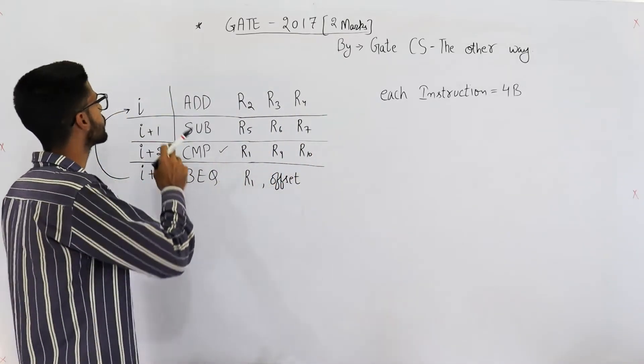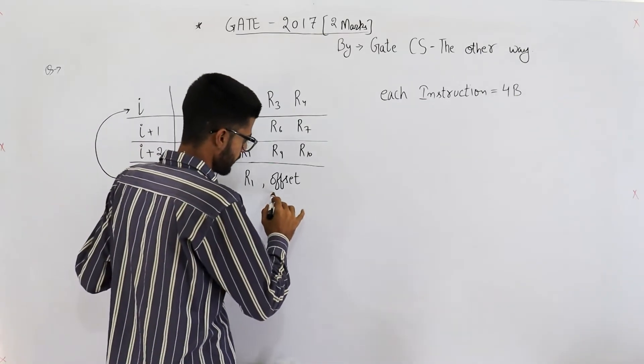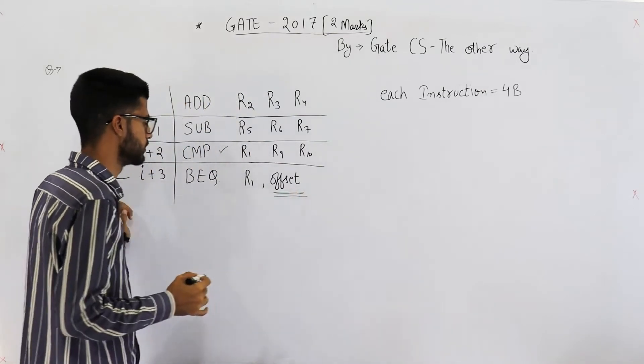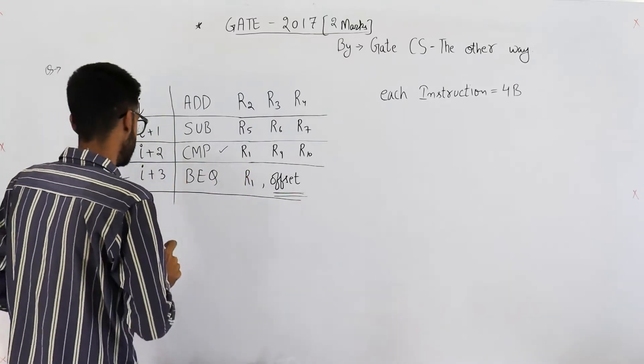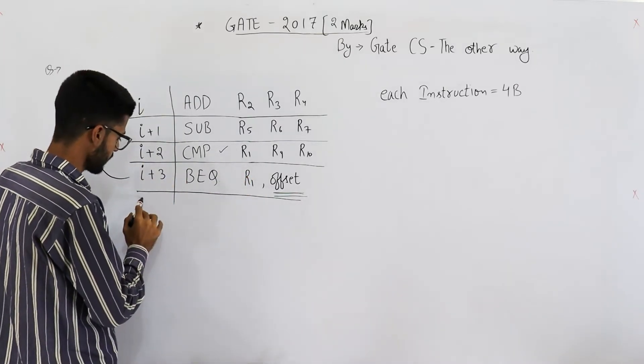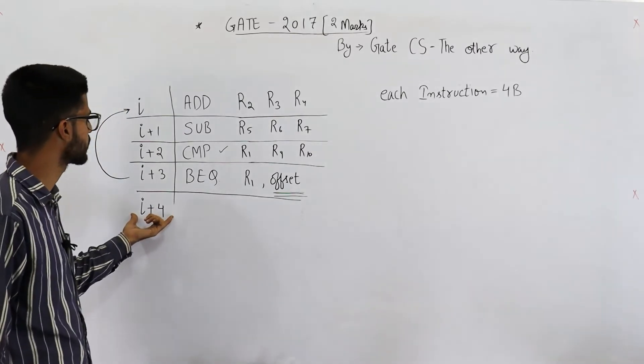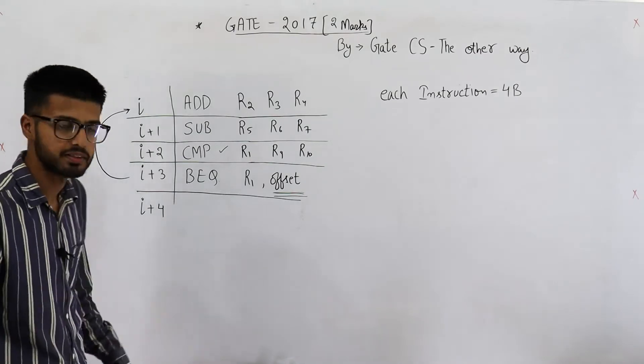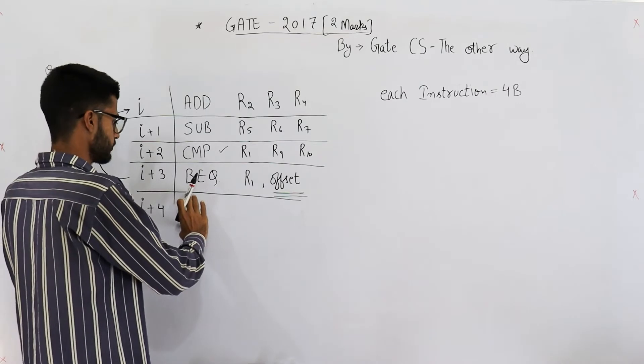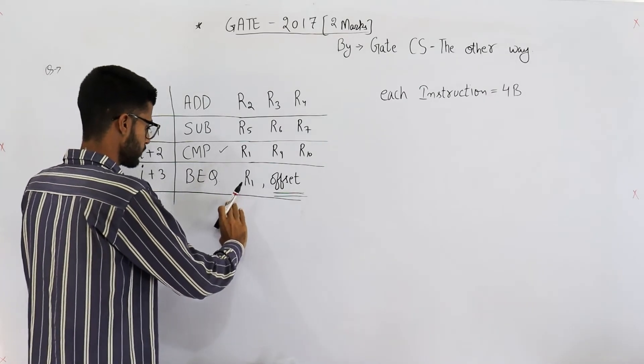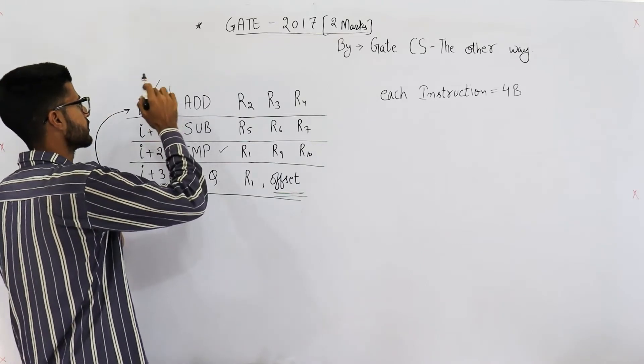We branch to instruction number i from here, and this offset is relative to PC. Now whenever we are on this BEQ instruction, PC will always contain the address of instruction i+4 because PC always points to the next instruction. Now we need to calculate with respect to this PC value what should be the value of offset to cause a jump to this instruction.